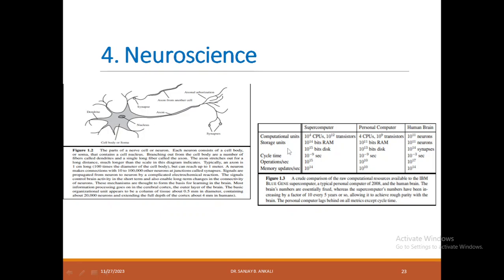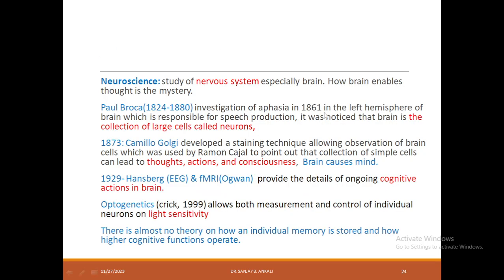When we compare the human brain with the fastest computer, these values say that except for the cycle time, the human brain is more able to store, process, and manipulate information compared to the fastest computers. Let us talk about experimentations conducted in neuroscience.